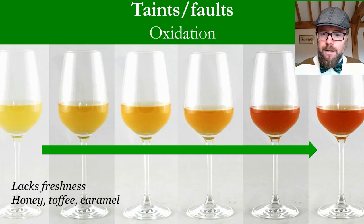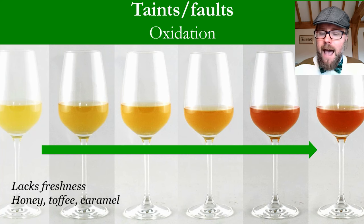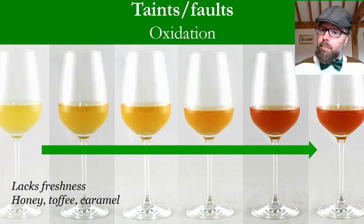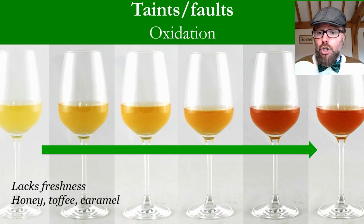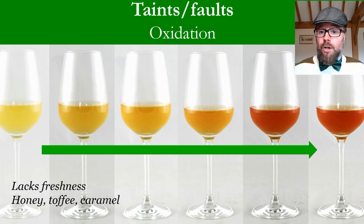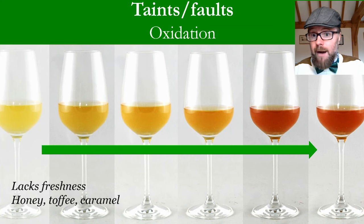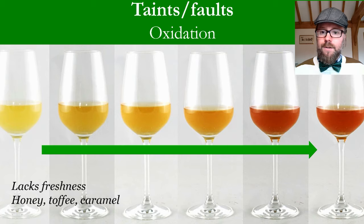An oxidised wine will appear deeper coloured and more brown than it should be, and may have aromas of toffee, honey, caramel or coffee, lacking freshness and fruitiness. Some wines are purposely made this way — like Vin Jaune from Jura in eastern France, tawny ports, or Sherry — and in those cases it is considered complexity, not a fault. But in fresher wines this is a fault. It's important to remember there is positive, controlled oxidation such as in barrels and bottles, but also negative, unwanted oxidation.